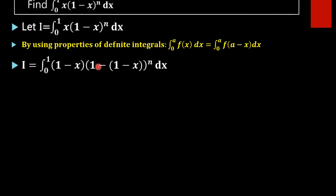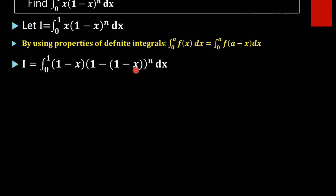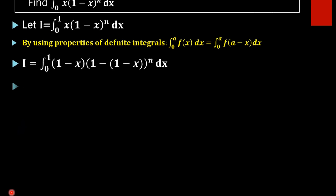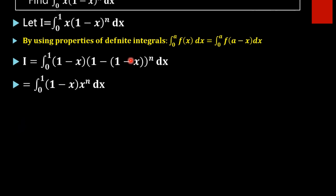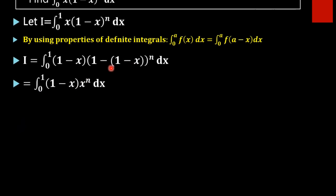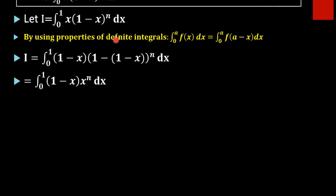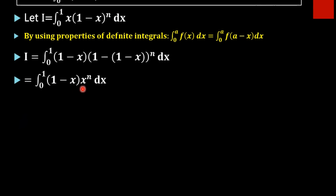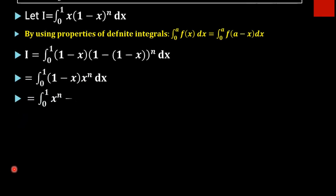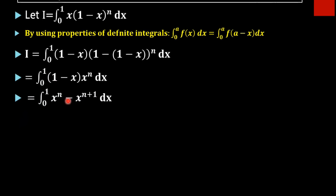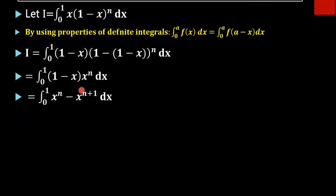So we get integral 0 to 1 of (1 minus x) into x raised to n, which simplifies to integral 0 to 1 of (1 minus x) into x raised to n. On multiplying each term, we get integral 0 to 1 of x raised to n minus x raised to n plus 1 dx.